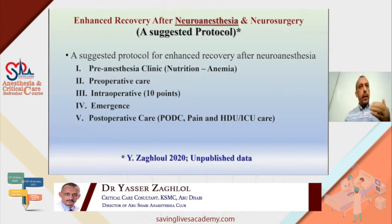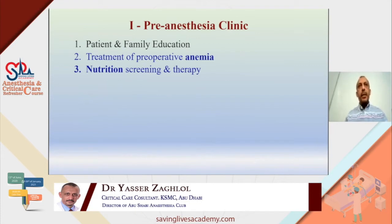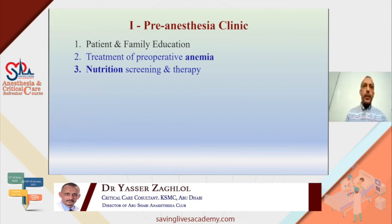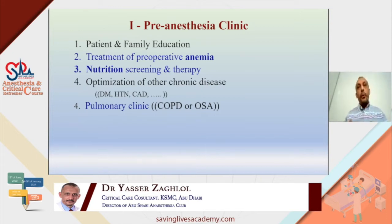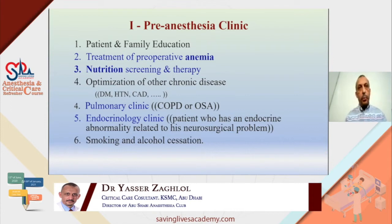Regarding the pre-anesthesia clinic: patient and family education is important, preoperative anemia should be treated, and nutrition screening and therapy are of great importance. Optimization of chronic disease is also key — patients with obstructive sleep apnea or COPD should be referred to the pulmonary clinic. Many patients coming for craniotomy may have pituitary adenoma or gland pressure, so if there are endocrinology abnormalities like diabetes insipidus, they should be referred to the endocrinology clinic. Smoking and alcohol should also be controlled.